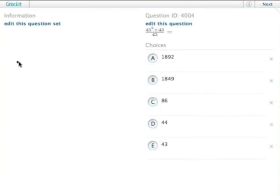43 squared plus 43 over 43 looks like it would be a lot of math, especially if you multiplied 43 times 43. However, I think it's in your best interest not to think of it that way.